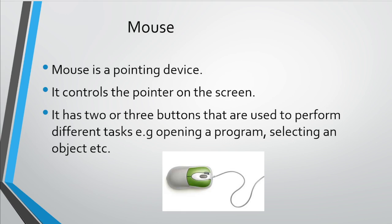It is used to control the cursor or pointer on the screen and to give commands to the computer. A mouse is moved on a flat surface to control the movement of the cursor. A mouse has two or three buttons and these buttons are used to perform different tasks, for example, opening a program, selecting an object, etc.